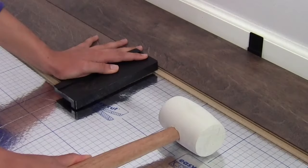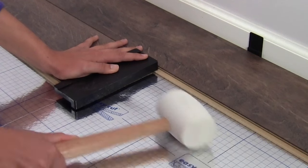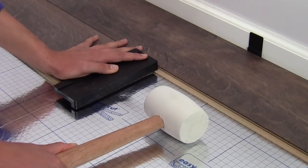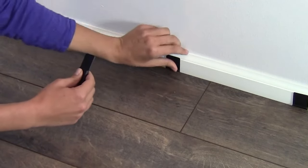Use a tapping block or the short side of a scrap piece of laminate to tap the end joints together until they lock. When done, remove your spacers.